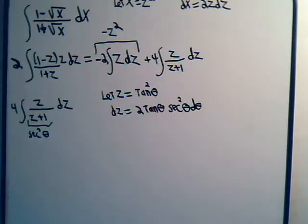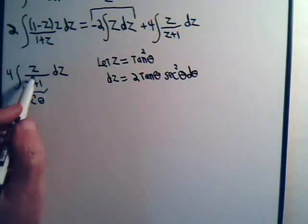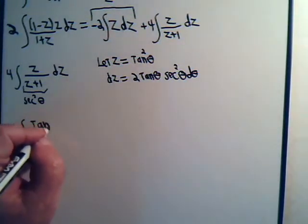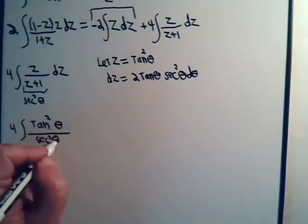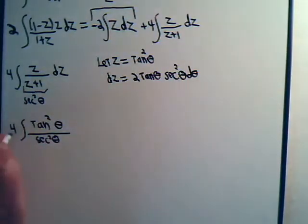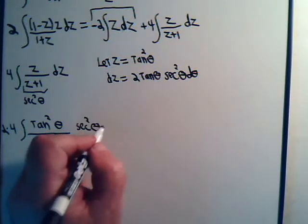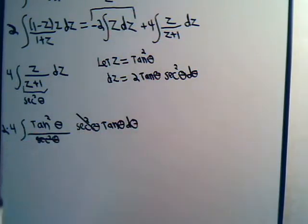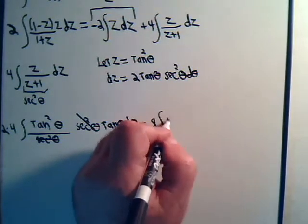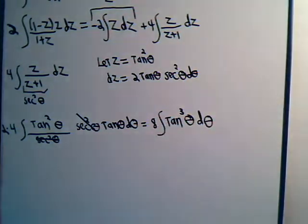This cancels with that. So let's write the whole thing out. We have 4 times the integral of tangent squared theta divided by secant squared theta, times dz — which is 2 times secant squared theta times tangent theta dθ. The secant squared terms cancel, so we have 8 times the integral of tangent cubed theta dθ. And this we should know how to handle.